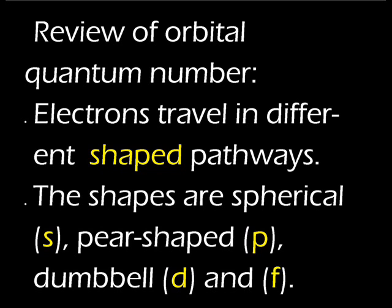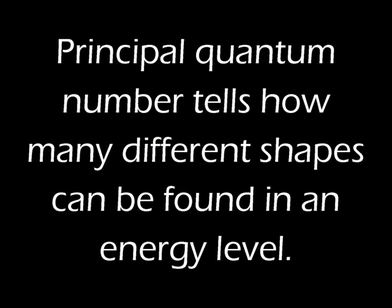There can be more than one shape of orbit within each energy level. It just so happens that the principal quantum number equals the variety of shapes found within each energy level. For example, the first energy level (principal quantum number one) has only one shape: spherical. The second energy level has two shapes: spherical and pear-shaped. The third energy level has three shapes: spherical, pear-shaped, and d. The sequence of shapes is s, p, d, then f. In our course, we'll primarily be using electrons that fill the s, p, and d shaped orbitals.